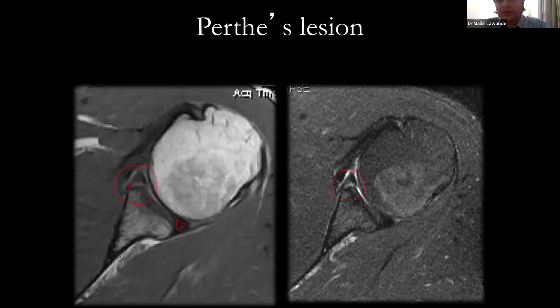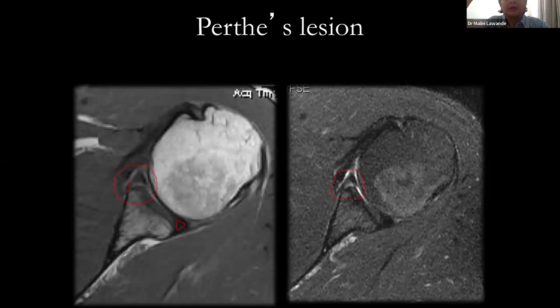Does it really matter to the surgeon whether it is a Perthes or a Bankart lesion? Not really — they want to know whether the labrum is torn, and management would not differ too much between these entities.